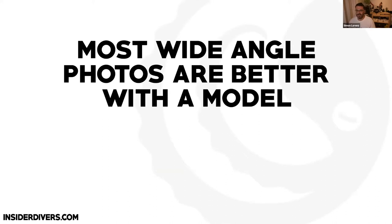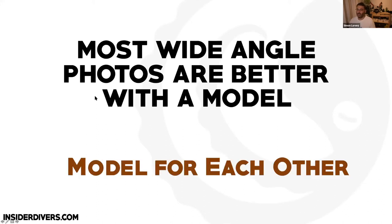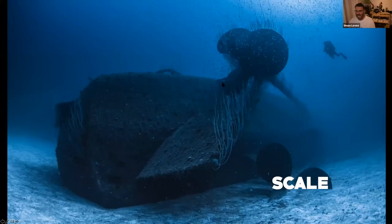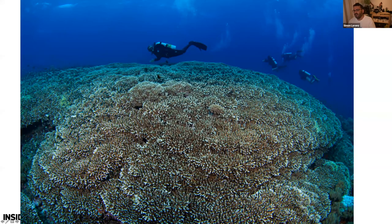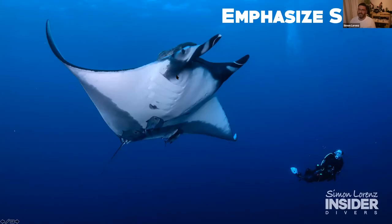One thing I always want to remind everyone is that most wide-angle photos are better when there's somebody in them, because it gives an extra layer of storytelling. You're always diving with a buddy, and your buddy can always be a model — even if you're both photographers, you can model for each other. A model can help you add scale, making the size of something like this wreck in Bikini Atoll look really large. Also this reef in Tubbataha just looks better with a human there, showing how large these staghorn coral fields are.